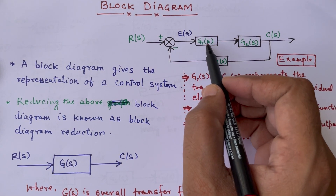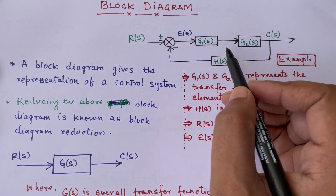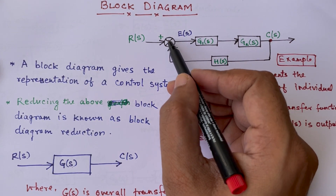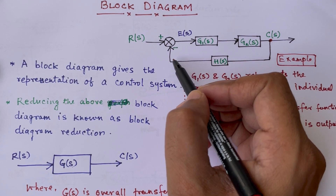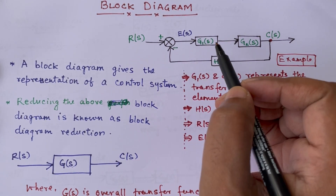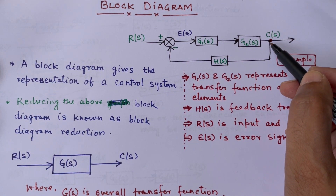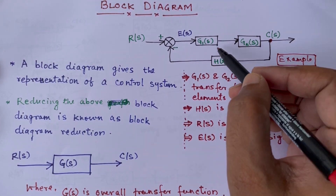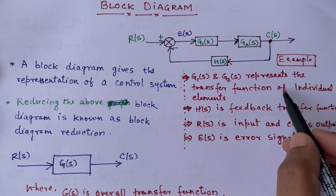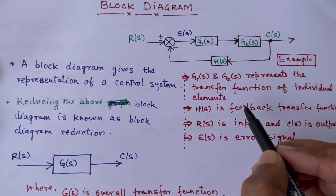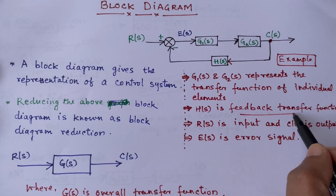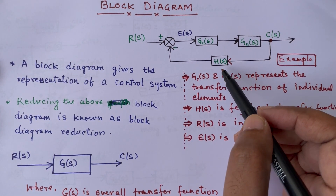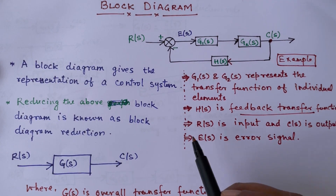The summing point is represented as a circled cross, where plus and minus represent whether a signal is being added or subtracted. The takeoff point is represented as a dot from where a signal branches off. G1(s) and G2(s) are the transfer functions of the individual elements, and H(s) is called the feedback transfer function because it goes from the output back to the input side.